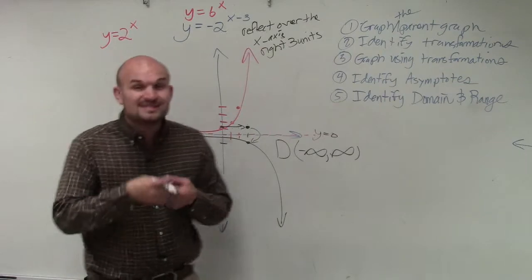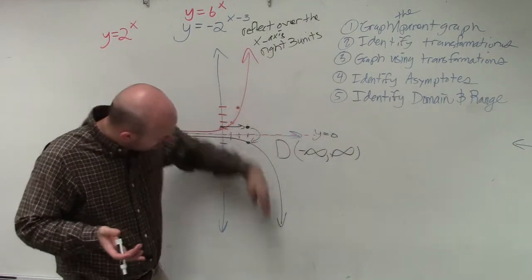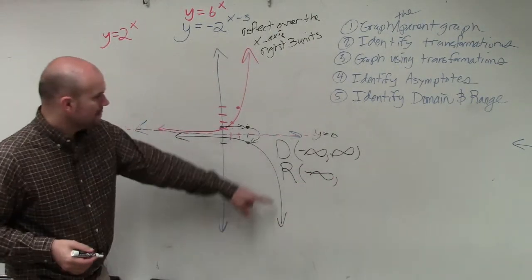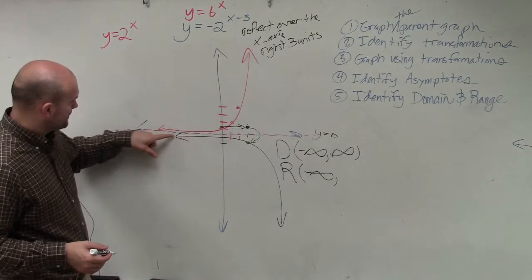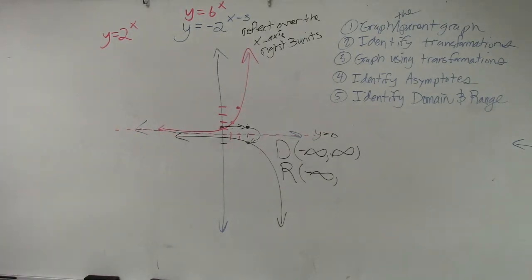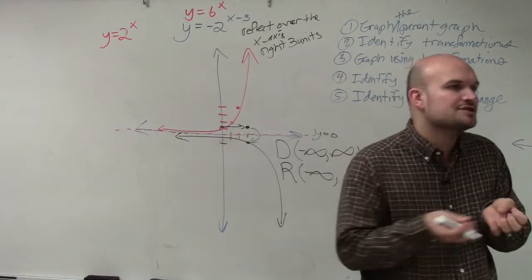Now let's look at the range, which is the set of all y values. So how low is this graph going to go? Down to infinity. And then how high is this graph going to go? Remember, what is this asymptote? What is an asymptote again?